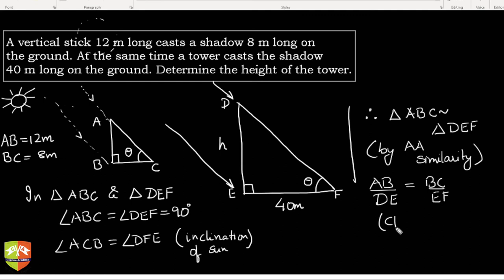the values. So AB was 12 meters times EF—EF is 40 meters—divided by BC—BC was 8. So this will go 5 times, so it is 60 meters. You can say the height of the tower is 60 meters.